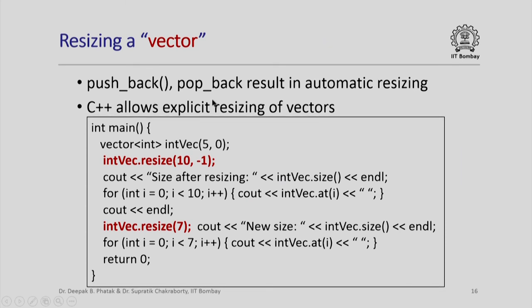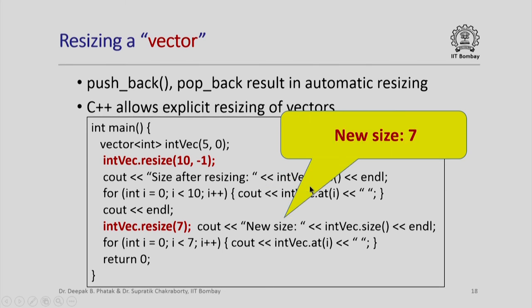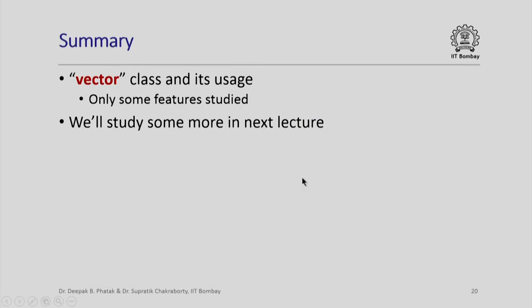C++ also allows explicit resizing of vectors. Here I create a vector of size 5 initialized to 0, then resize it to size 10 with additional elements initialized to -1, giving 5 zeros followed by 5 minus-ones. Resizing again to size 7 keeps only the first 7 elements, printing 5 zeros followed by 2 minus-ones. In summary, this lecture covered the vector class and its key features; more features will be studied in the next lecture.